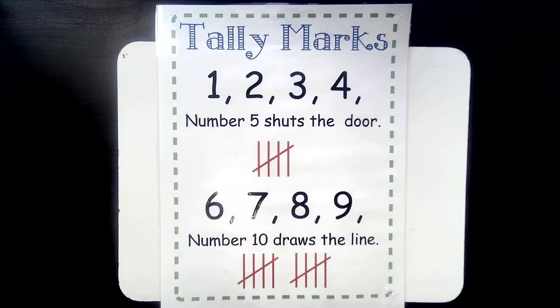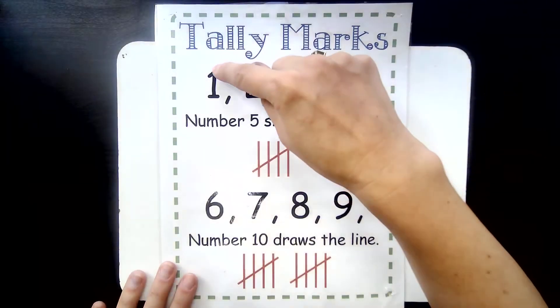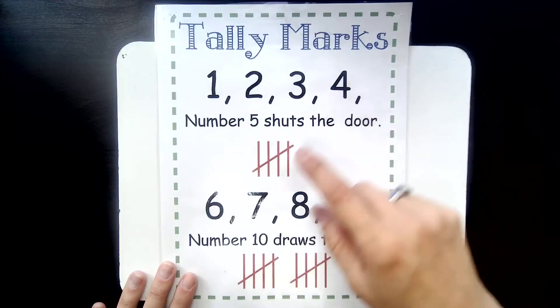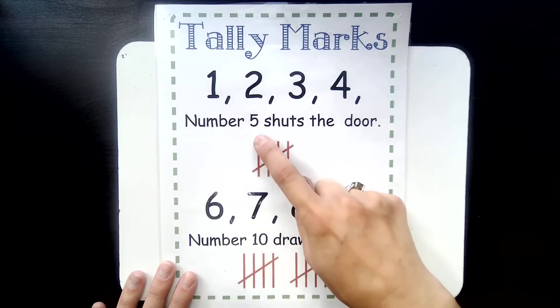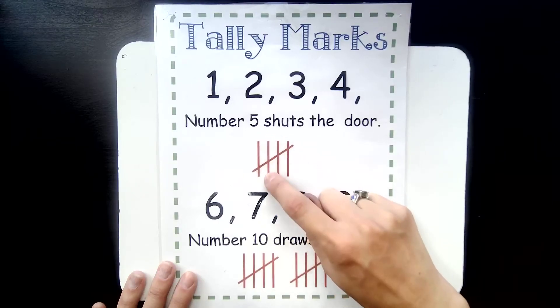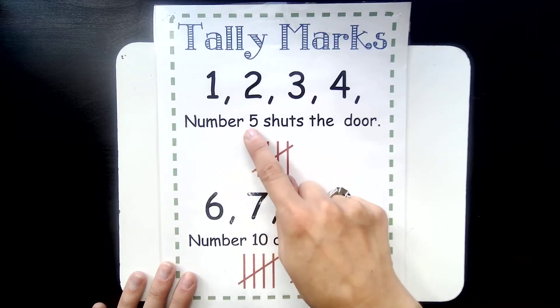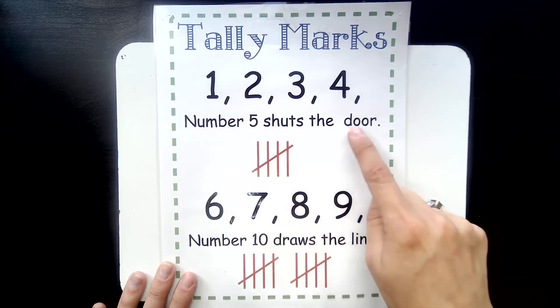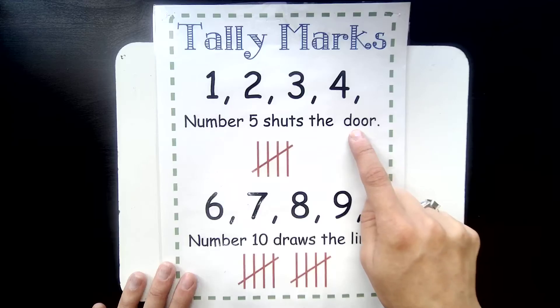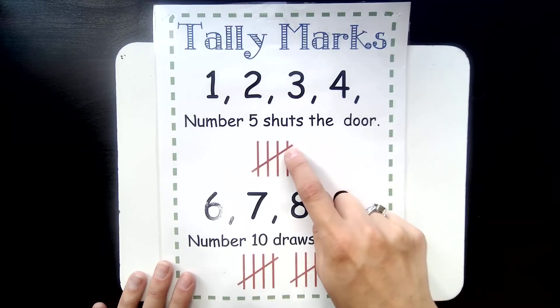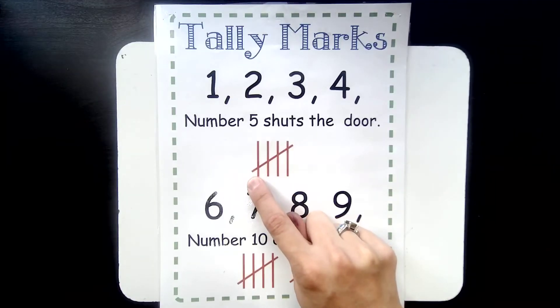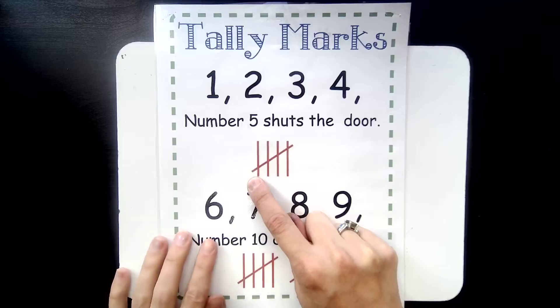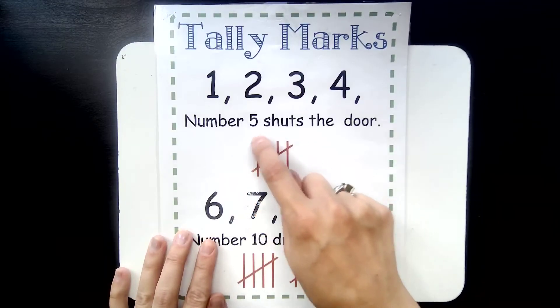Let's talk about what that means. When they say one, two, three, four, that means you make four straight lines which are called tallies like this. One, two, three, four. And then it says number five shuts the door. That means on your fifth tally, you're going to go across those four tallies like this, like a door. And that groups them together so that you know that this is a group of five.